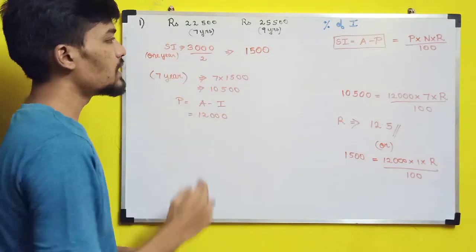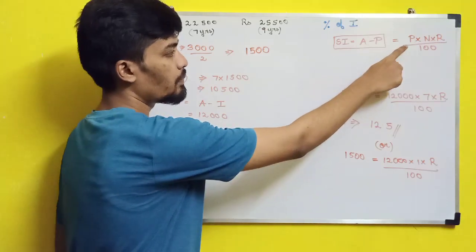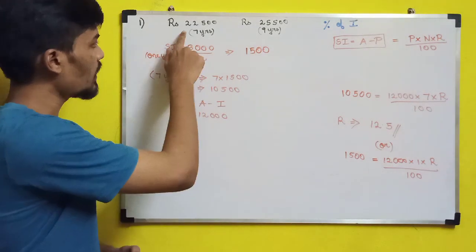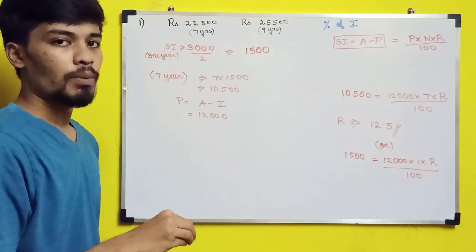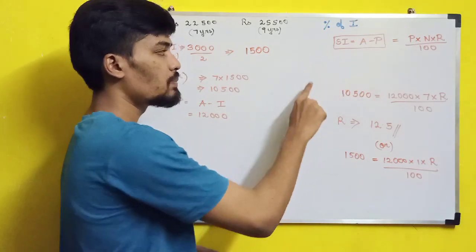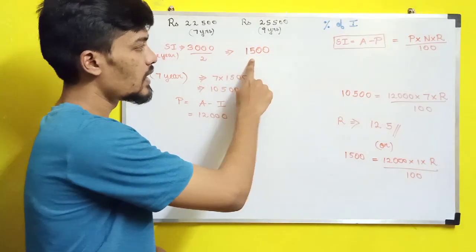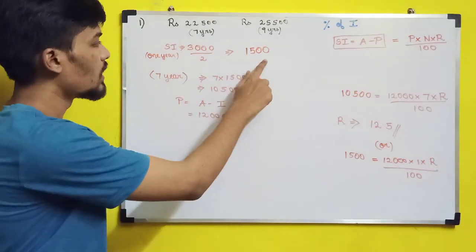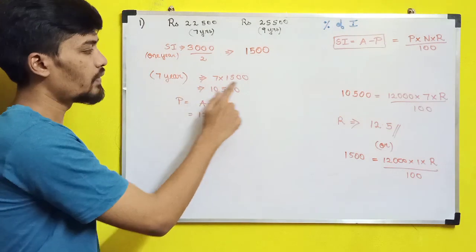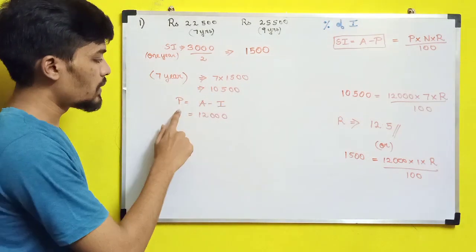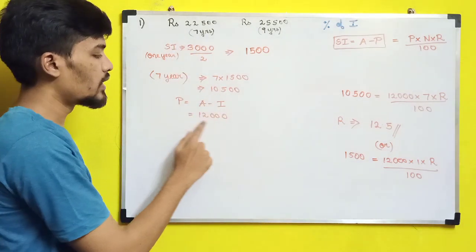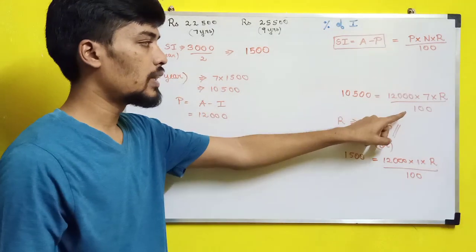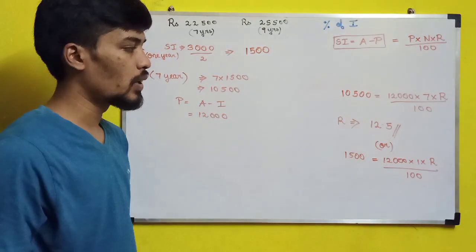Now we find the principal. Since amount equals simple interest plus principal, for seven years the interest is 7 × 1,500 = 10,500. So principal = 22,500 − 10,500 = 12,000. Substituting into the formula: 10,500 = 12,000 × 7 × r / 100, giving r = 12.5%. If you use one year values (1,500 = 12,000 × 1 × r / 100) you get the same answer.